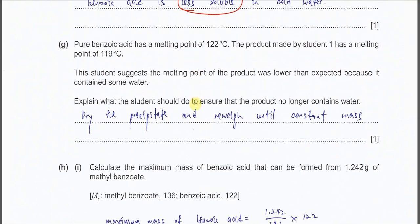Part G: Pure benzoic acid has a melting point of 119°C. A student's product showed a melting point lower than expected because some water is still present inside. Explain what the student should do to ensure the product is properly dried: continue drying and wait until the mass is constant.